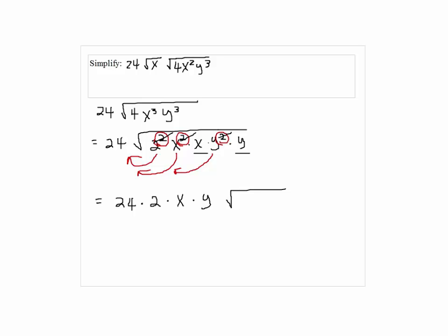So, the inside we still have x and y left. So, the answer will be 48xy outside times square root of xy inside.